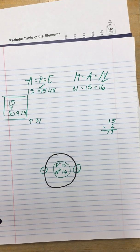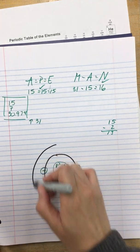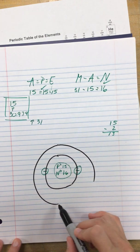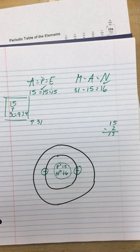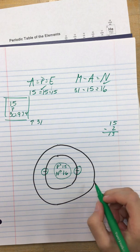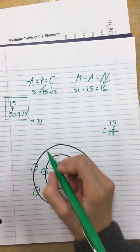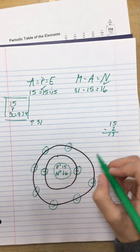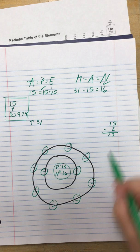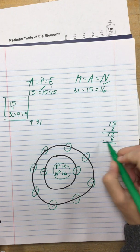Now I know the middle ring can hold eight. So, let's add eight. One, two, three, four, five, six, seven, eight. I still need five more electrons. Meaning, I need another ring.